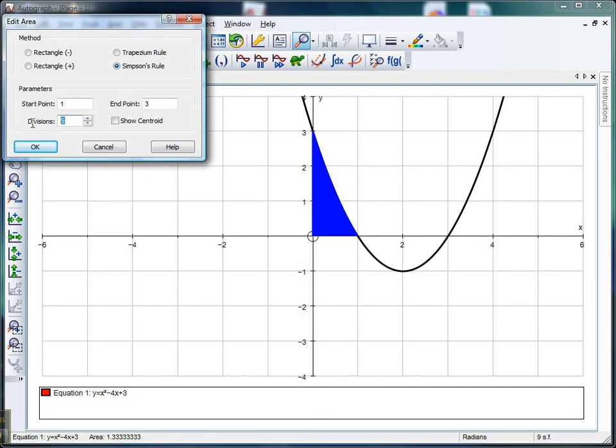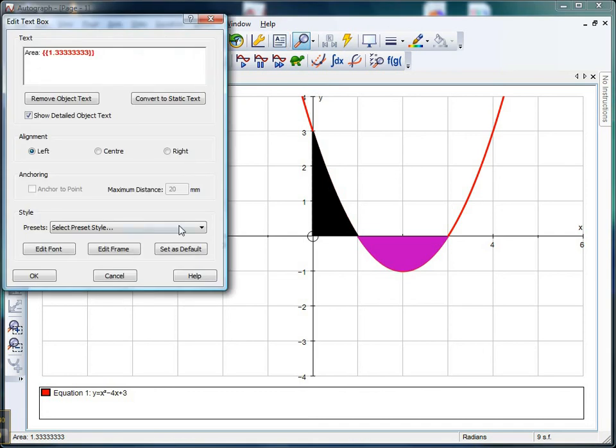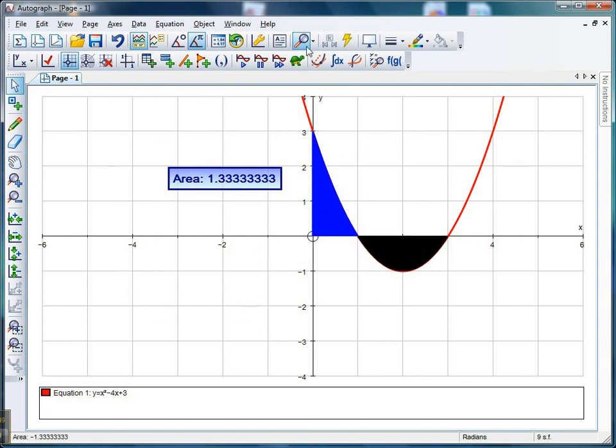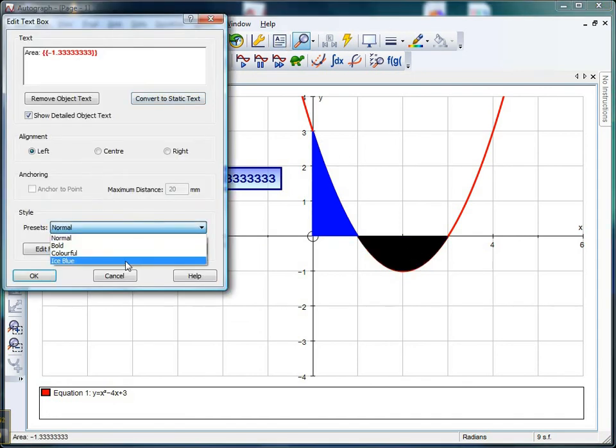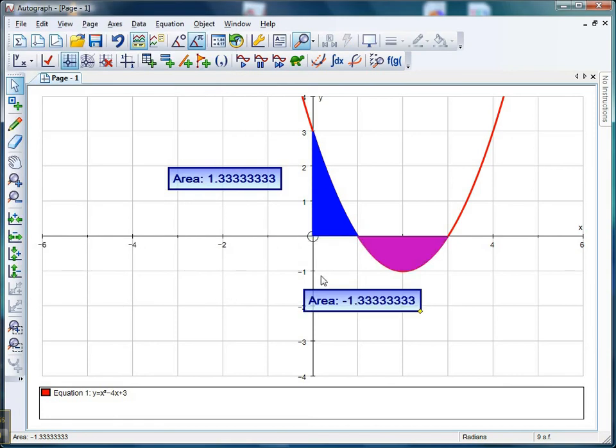Simpson's rule, couple of hundred, click OK. Now if I select that area and I just text box it, I'll go for a lovely bit of ice blue and click OK. I get that size of area is 1.33333. If I select that area and again text box it with ice blue, I see that that area is negative 1.33, and that explains why we got our strange result.